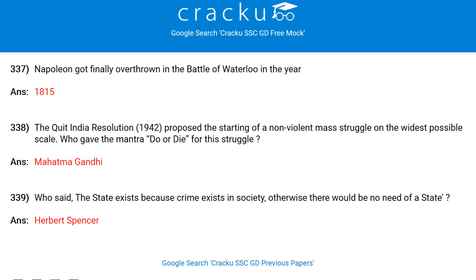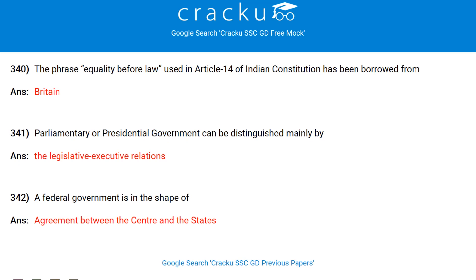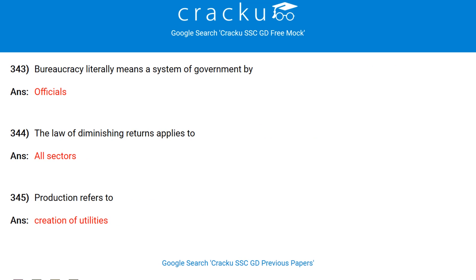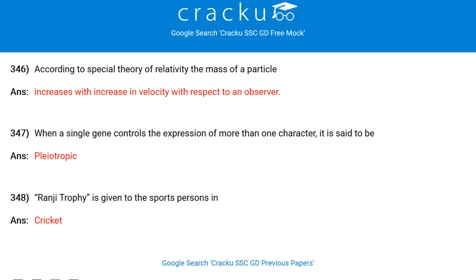The Quit India Resolution 1942 proposed the starting of a non-violent mass struggle on the widest possible scale. Who gave the mantra 'Do or Die' for his struggle? Mahatma Gandhi. Who said the state exists because crime exists in society? Herbert Spencer. The phrase 'equality before law' used in Article 14 of the Indian Constitution has been borrowed from Britain. Parliamentary or presidential government can be distinguished mainly by the legislative-executive relations.